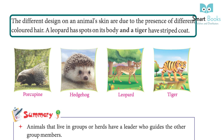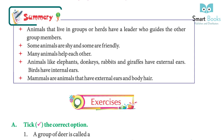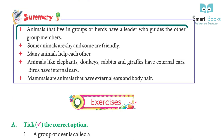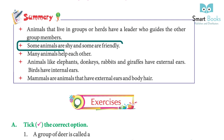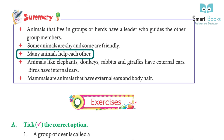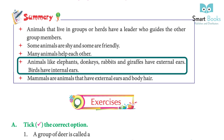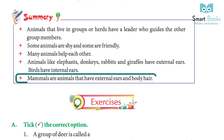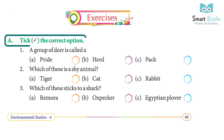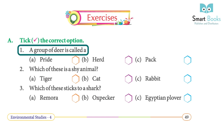The different designs on an animal's skin are due to the presence of different colored hair. A leopard has spots on its body and a tiger has a striped coat. Summary: animals that live in groups or herds have a leader who guides the other members. Some animals are shy and some are friendly. Many animals help each other. Animals like elephants, donkeys, rabbits, and giraffes have external ears, while birds have internal ears. Mammals are animals that have external ears and body hair.